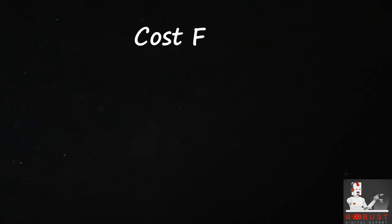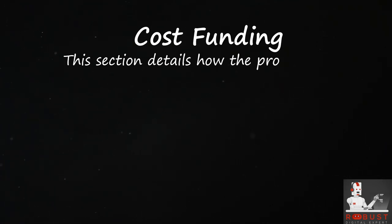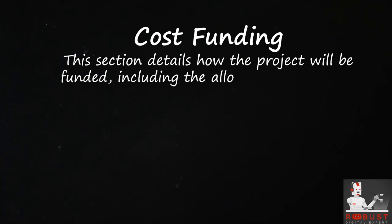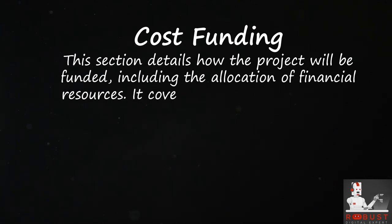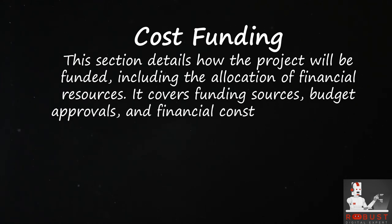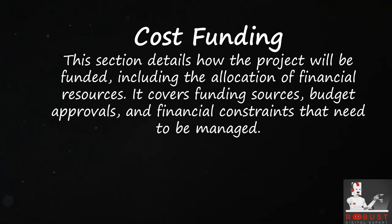Cost Funding: This section details how the project will be funded, including the allocation of financial resources. It covers funding sources, budget approvals, and financial constraints that need to be managed.